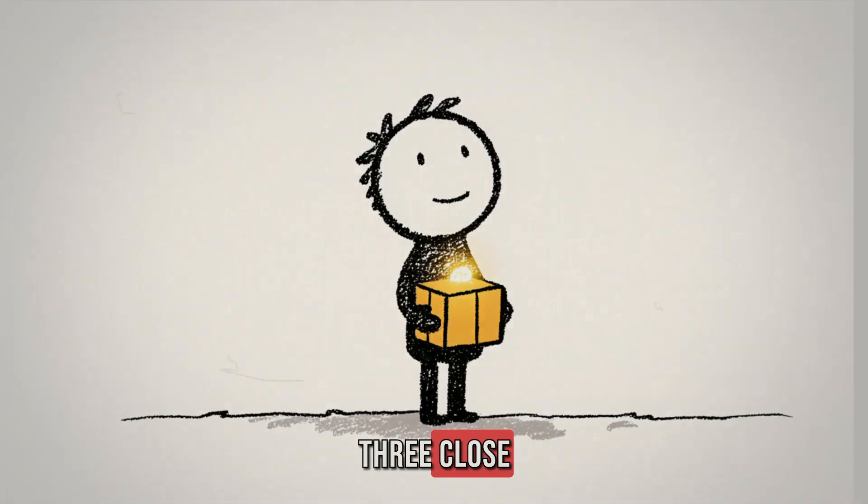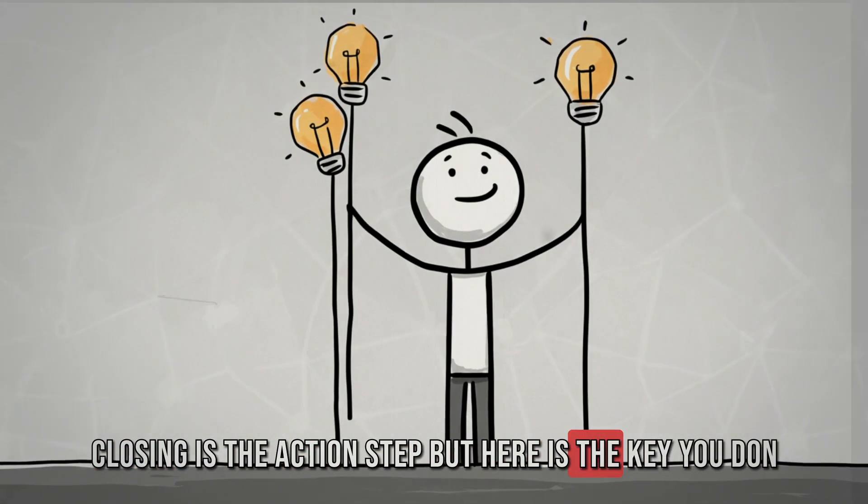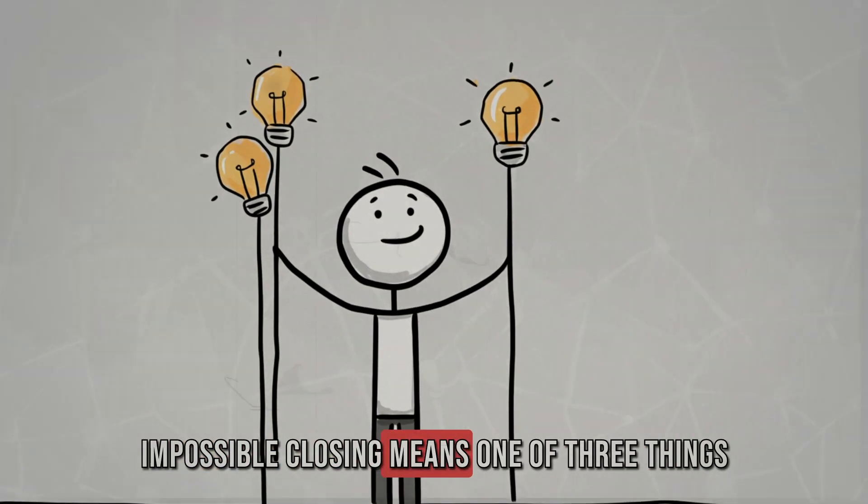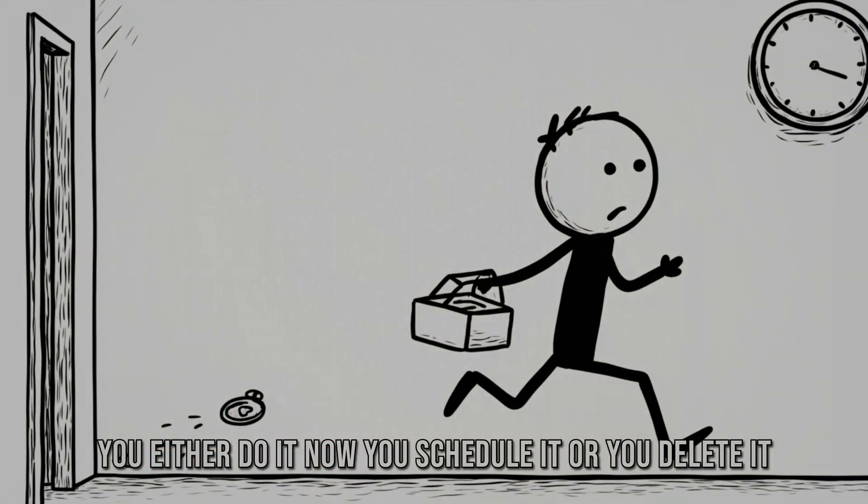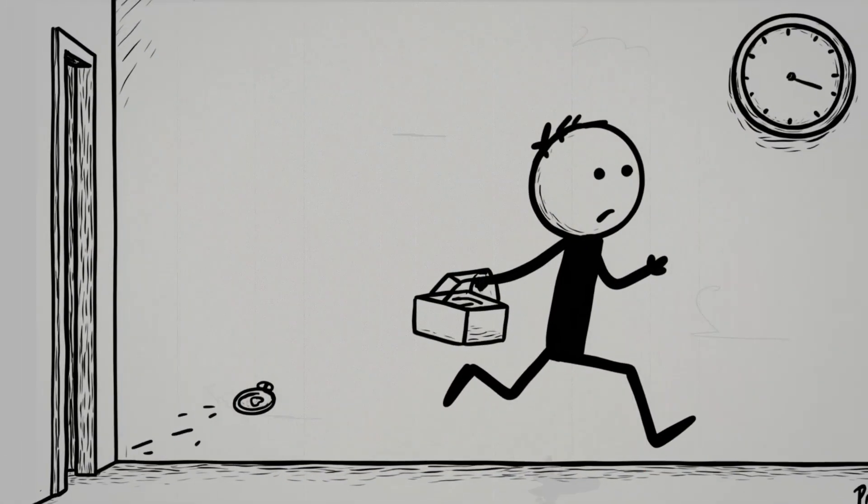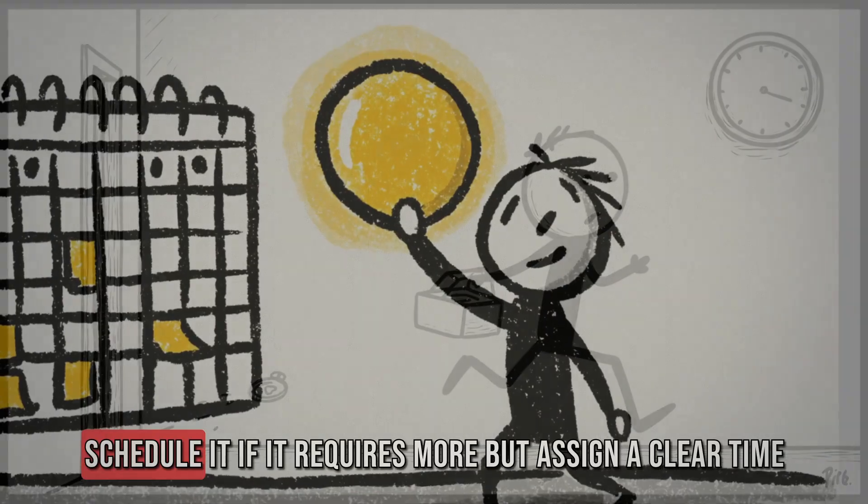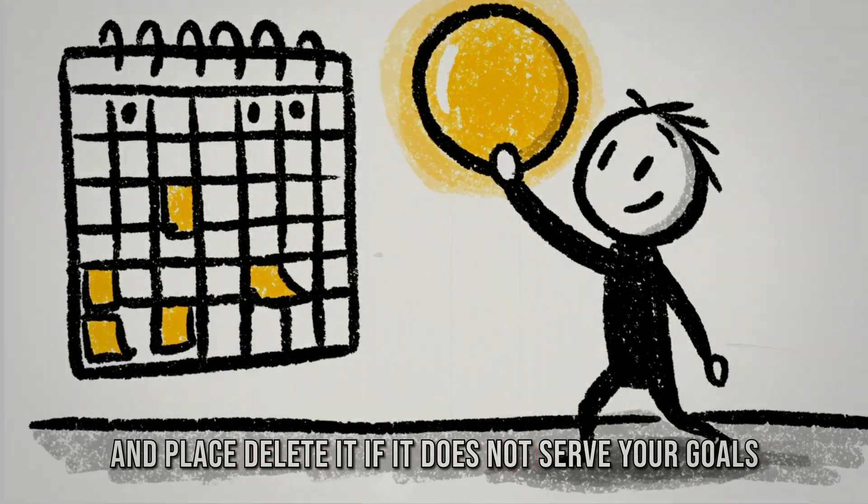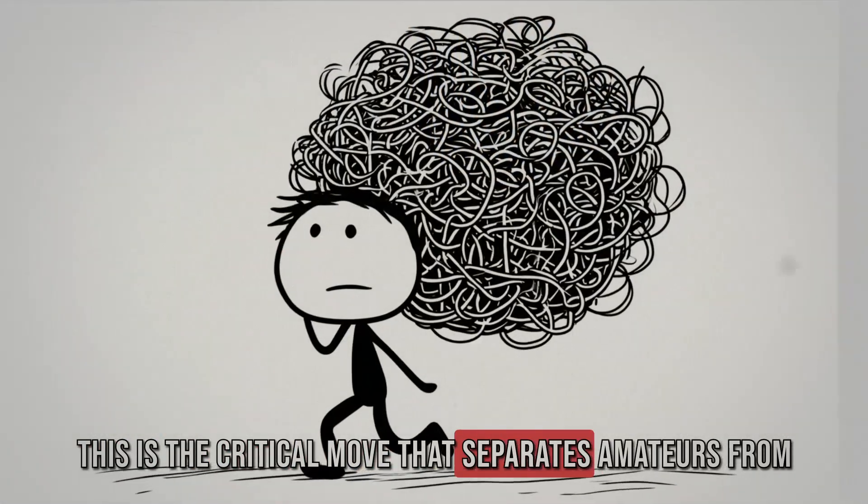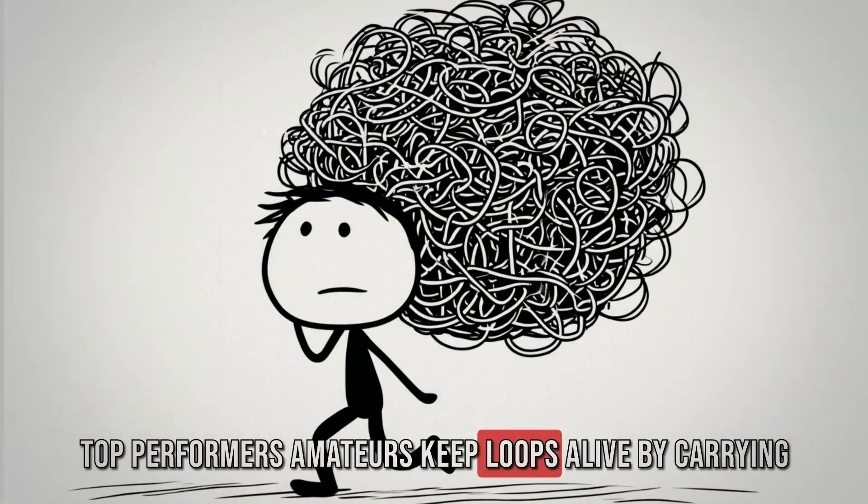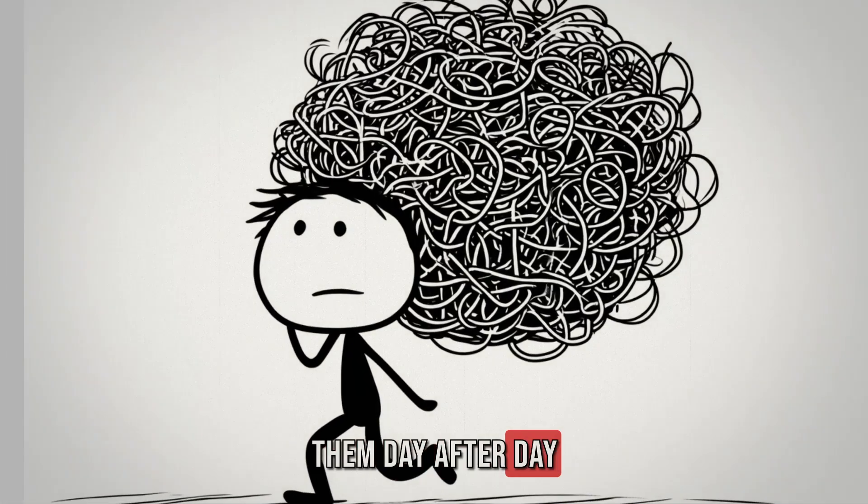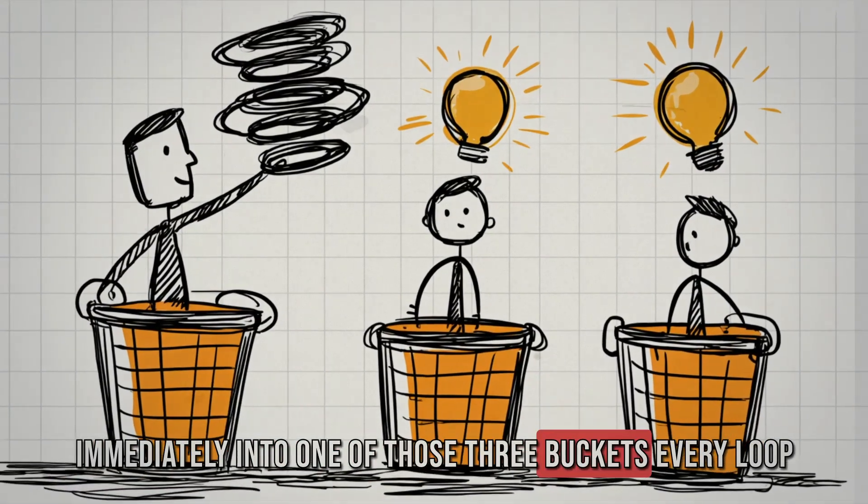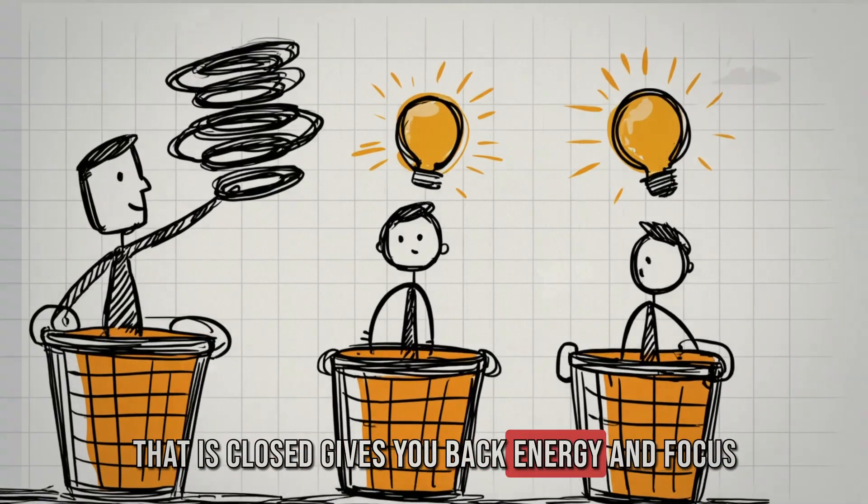Now comes phase three, close. Closing is the action step. But here is the key. You don't need to finish everything right now. That is impossible. Closing means one of three things. You either do it now, you schedule it, or you delete it. Do it now if it takes less than two minutes. Schedule it if it requires more, but assign a clear time and place. Delete it if it does not serve your goals. This is the critical move that separates amateurs from top performers. Amateurs keep loops alive by carrying them day after day. Top performers close loops by processing them immediately into one of those three buckets.